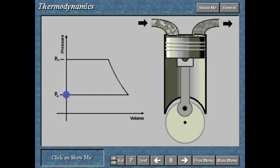Basic compressor operation corresponds with the ideal cycle pressure volume diagram. Click on Show Me to compare the two diagrams. When you are finished, click on the right arrow.